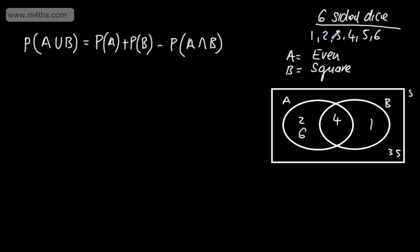These are equally likely outcomes. Leaving the denominator as 6, the probability of just A is 2 over 6, the intersection is 1 over 6, just B is 1 over 6, and on the outside we've got 2 over 6. All probabilities sum to 1, and that's one of the things we looked at in the last video.